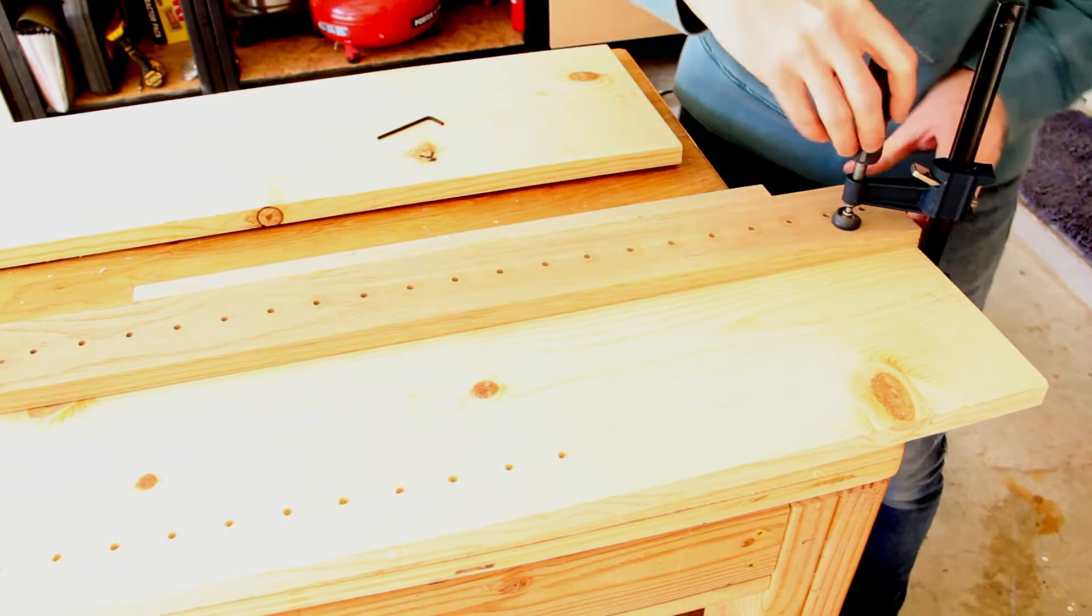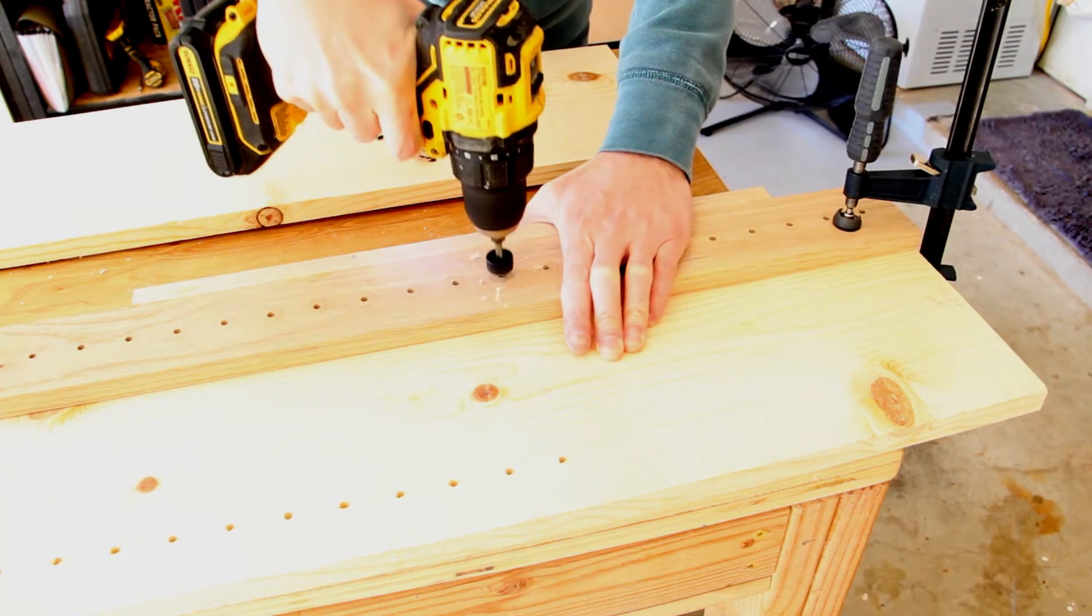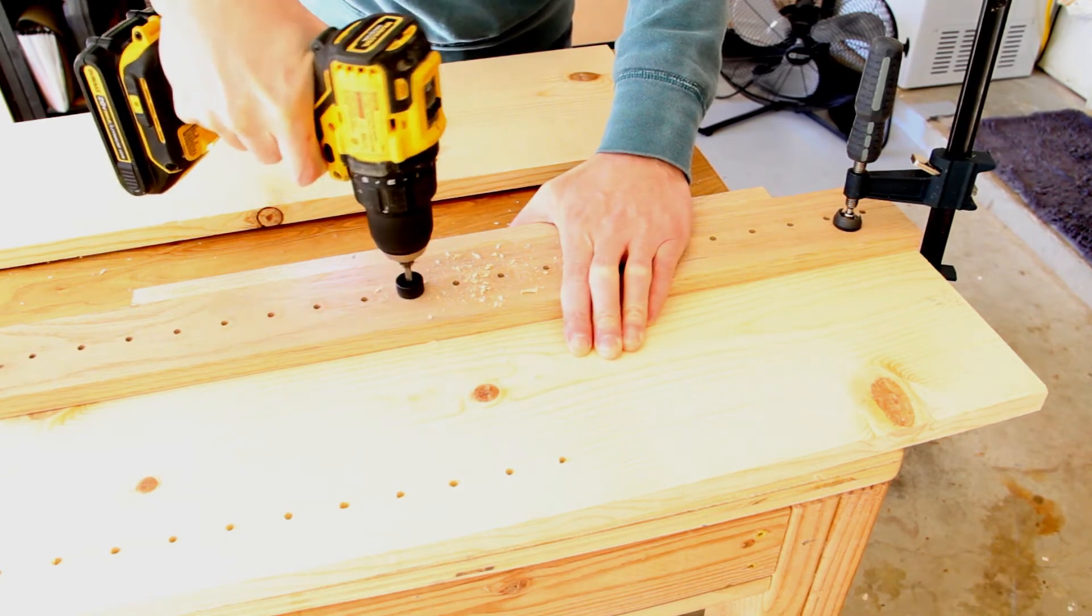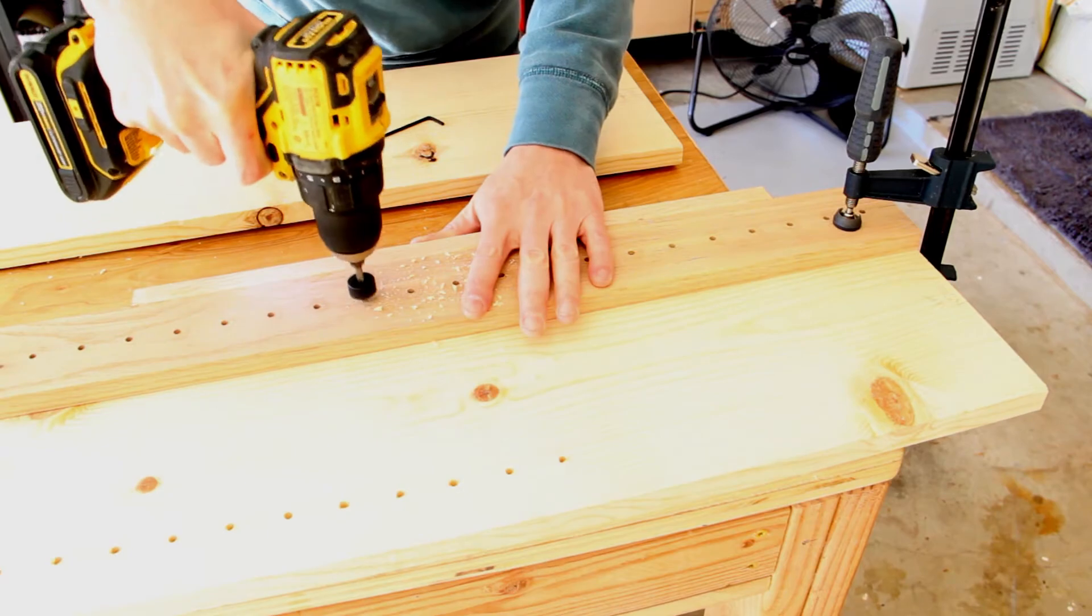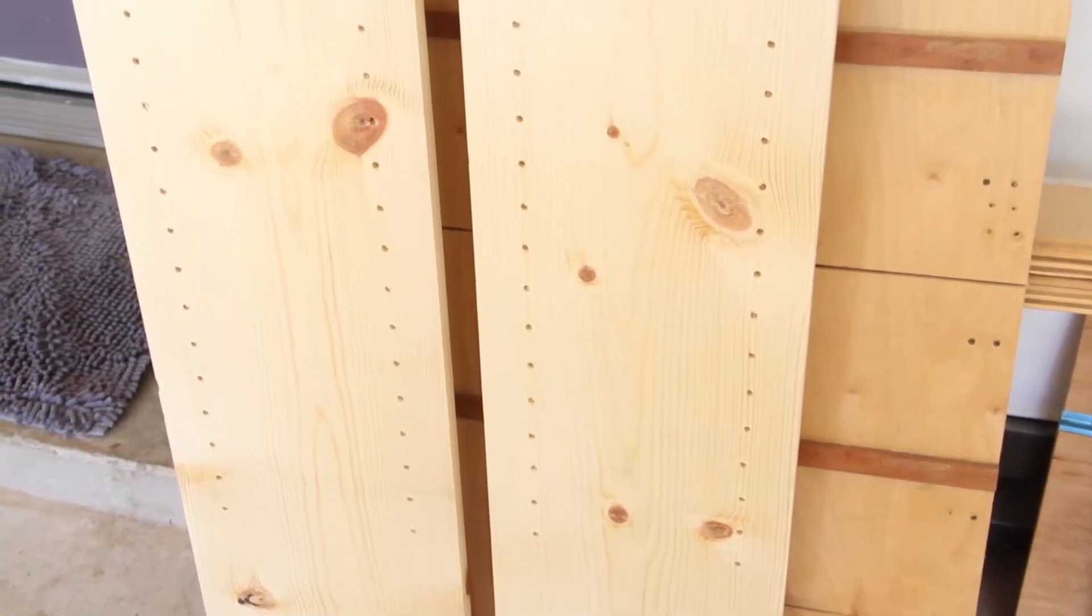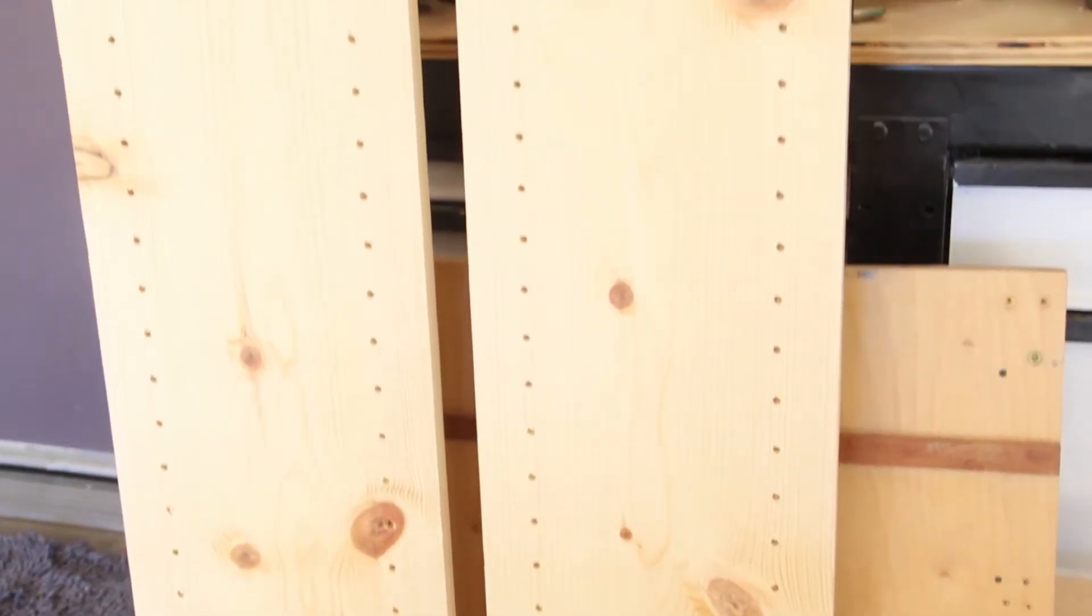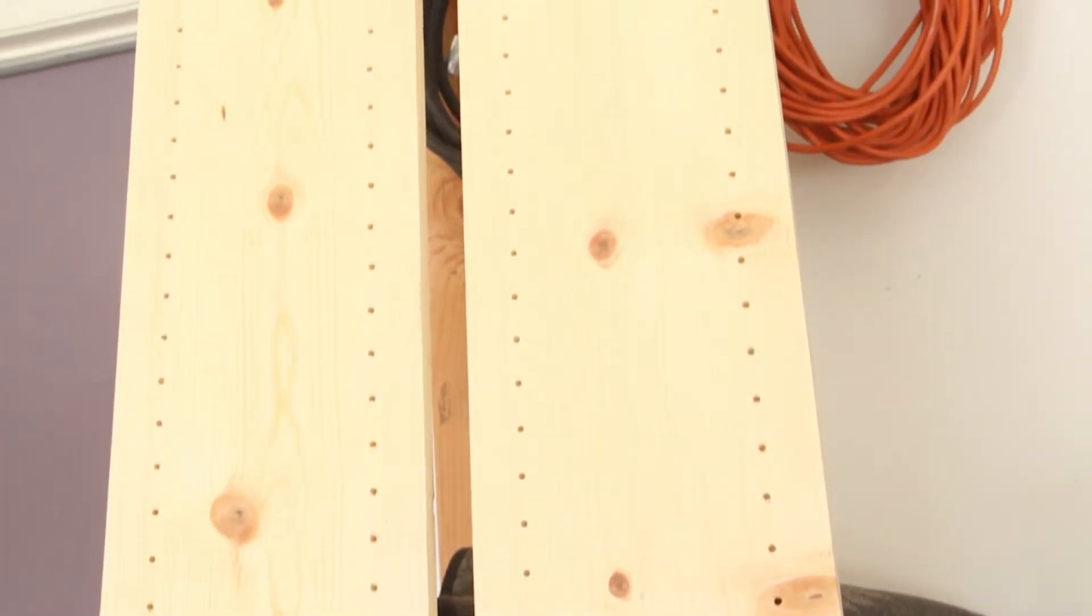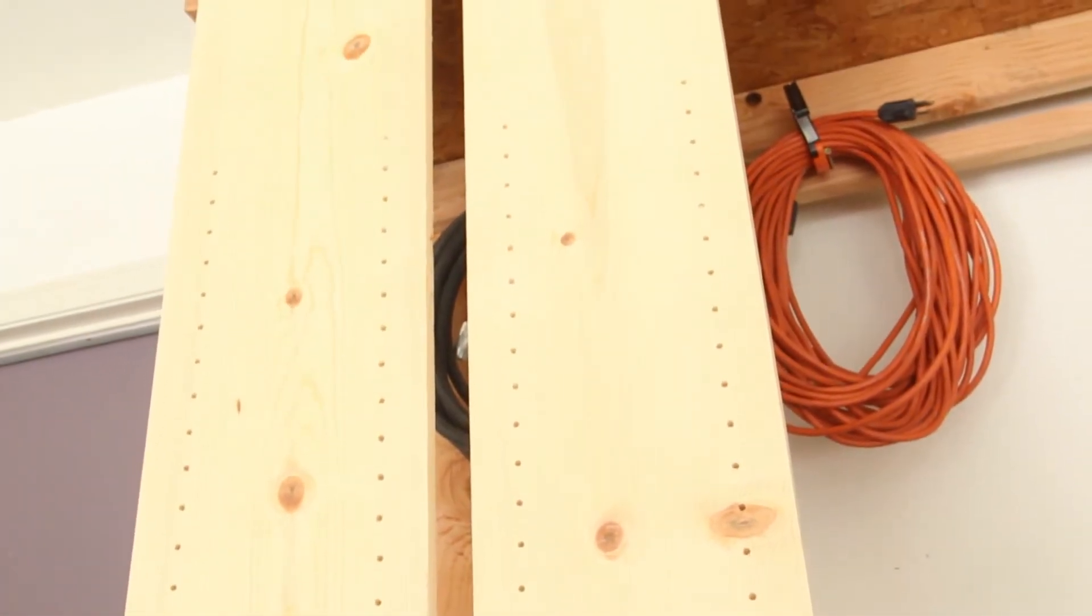And then here I have another jig which I made just for this project for drilling adjustable shelf pin holes. It's just a piece of oak with evenly drilled holes 32 millimeters apart and 37 millimeters in, which are the standard dimensions for shelving. And this jig allowed me to drill holes all the way up each side panel.